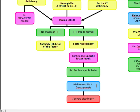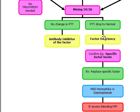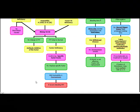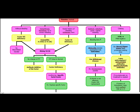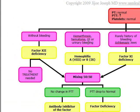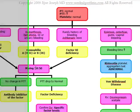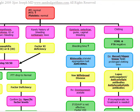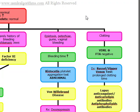Mild hemophilia A can be treated with desmopressin (DDAVP), but desmopressin does not work for hemophilia B. For severe bleeding, use fresh frozen plasma. If the mixing study shows no change in PTT, an antibody inhibitor of the factor is present. To summarize: elevated PTT, normal PT and platelets with hemarthrosis or hematoma — do a mixing study, confirm the factor deficiency, and replace it.